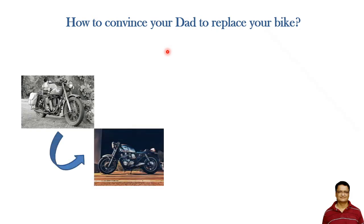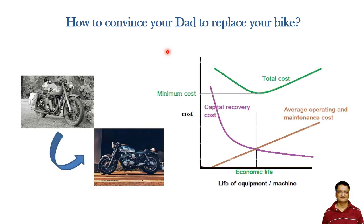Now, if you want to convince your dad to replace your old bike with a new one, here is a scientific technique for that. Any equipment or machine has different costs. Once you purchase a machine or equipment it has some capital cost, and that capital cost decreases over the period of time, which can be shown with this graph — you get less money as time passes.